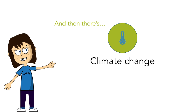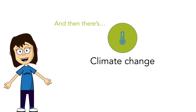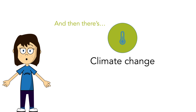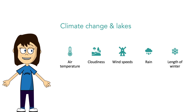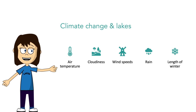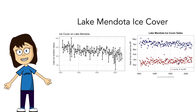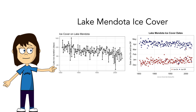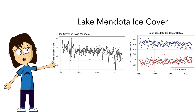And on top of all of this, there's also climate change. It's virtually impossible to be an ecologist these days without considering climate change as a real driver of populations, communities, and ecosystems. Thinking about Lake Mendota: air temperature is getting warmer, there might be changes in cloudiness and wind speeds, we're getting more rain, and the length of winter is decreasing. Here you can see the historic record of ice cover on Lake Mendota — in the late 1800s it used to last about 120 days; now that number is closer to 80 days. We've lost a significant amount of winter — the lake is freezing later and thawing earlier in the spring.